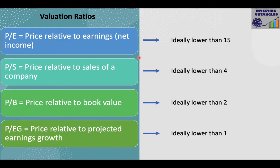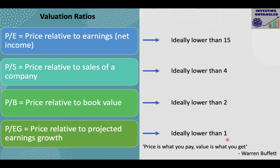I like to invest in companies where the P/E ratio is lower than 15, price-to-sales is lower than 4, price-to-book is lower than 2, and price-to-earnings-growth (PEG) is lower than 1. These numbers suggest the company is undervalued — you can buy its stock at a discount to its intrinsic or fair value. As Warren Buffett says: 'Price is what you pay and value is what you get.' Thankfully, most financial websites calculate these ratios for us.